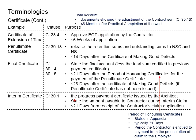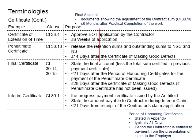Next, there is the interim certificate, found in Clause 30.1. It is related to the progress payment certificate issued by the architect. The contractor may claim for the work that has been done from time to time, and the completed work will be checked by the architect or the quantity surveyor. Once the amount of work done is confirmed, the interim certificate will be issued and the contractor is entitled to claim for the work done. This interim certificate will need to be issued within 21 days from the receipt of the contractor's claim application.